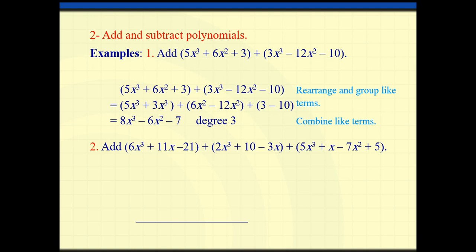I can also add three polynomials. I add the x³ terms together, the x² together, the x together, and the constants. So 6x³ plus 2x³ plus 5x³ gives me 13x³. I just have minus 7x². Then 11x minus 3x plus x gives me 9x. And minus 21 plus 10 plus 5 gives me minus 6. The degree is 3 and the leading coefficient is 13.